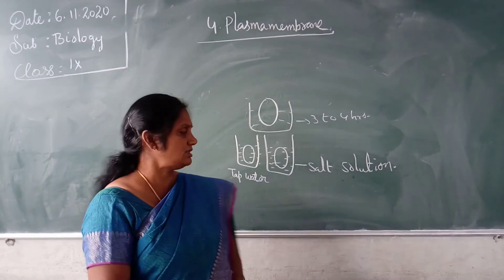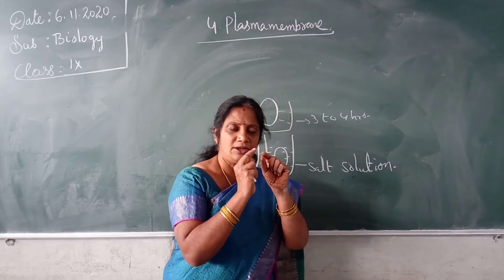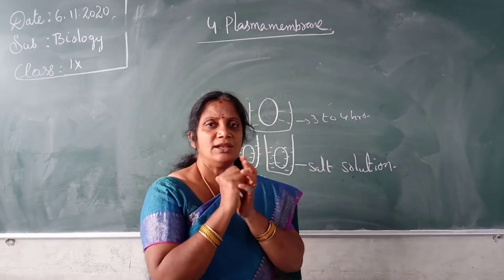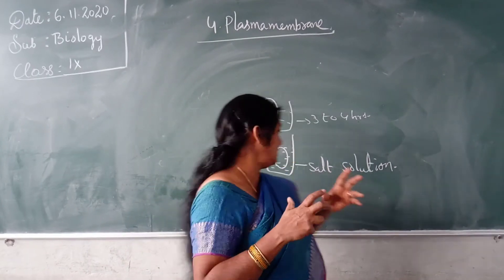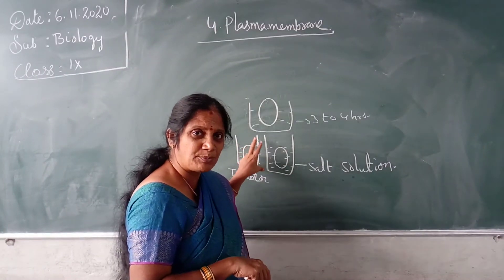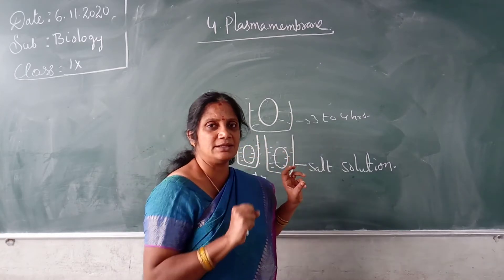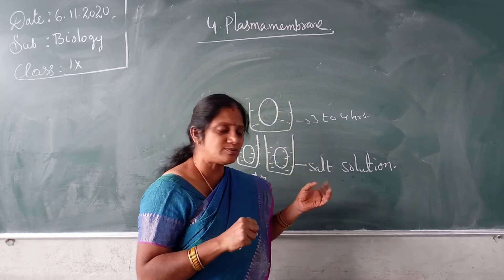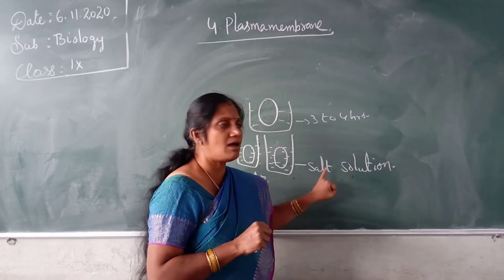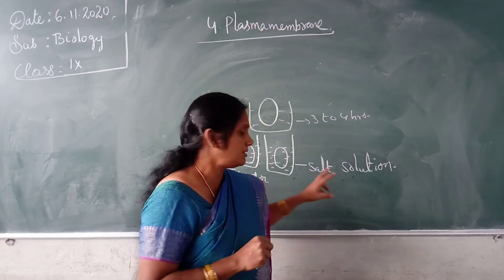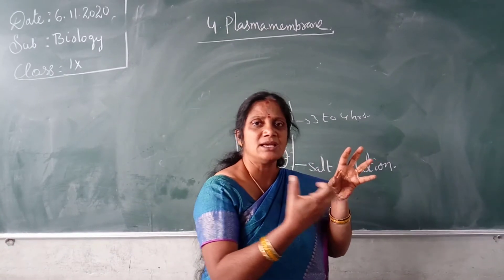After 3 to 4 hours, take out the eggs, wipe with a cloth, and measure the length again. You will observe that the egg kept in tap water has increased in size — because the plasma membrane absorbed water from the beaker. And the egg kept in the salt solution has shrunk — because water from the egg comes out.